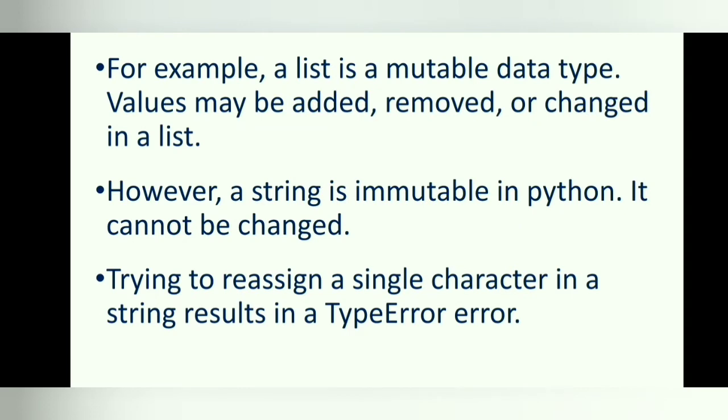For example, a list is a mutable data type. Values may be added, removed, or changed in a list. However, a string is immutable in Python. It cannot be changed. Trying to reassign a single character in a string results in a TypeError error.